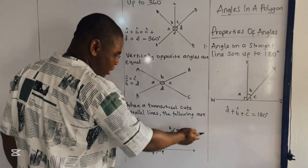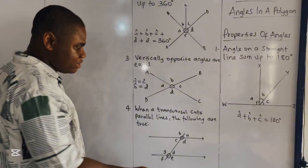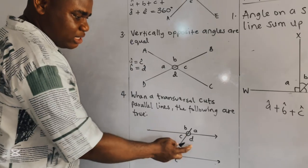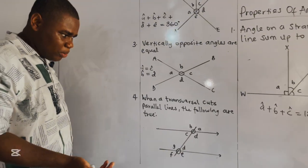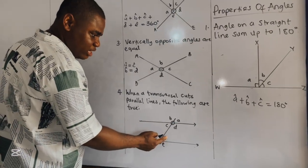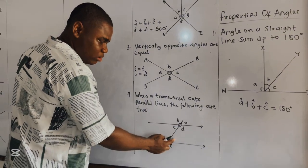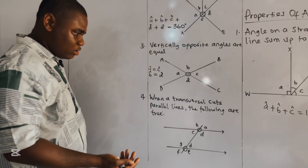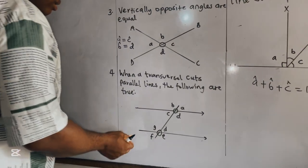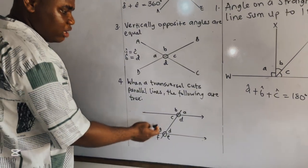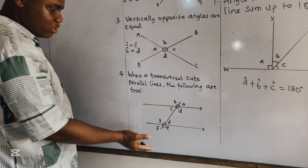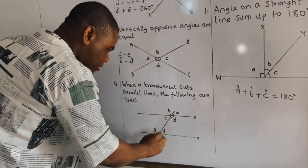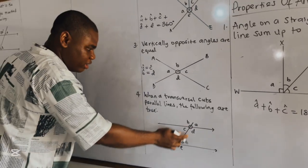For the last property: when a transversal cuts parallel lines, the following are true. We can have A equal to C — vertically opposite angles. B is equal to D — vertically opposite. A is equal to D — corresponding angles. The same applies to D and E as corresponding angles. B is also equal to G as corresponding angles, and C equals F as corresponding angles. You also have alternate angles, also known as Z-angles.